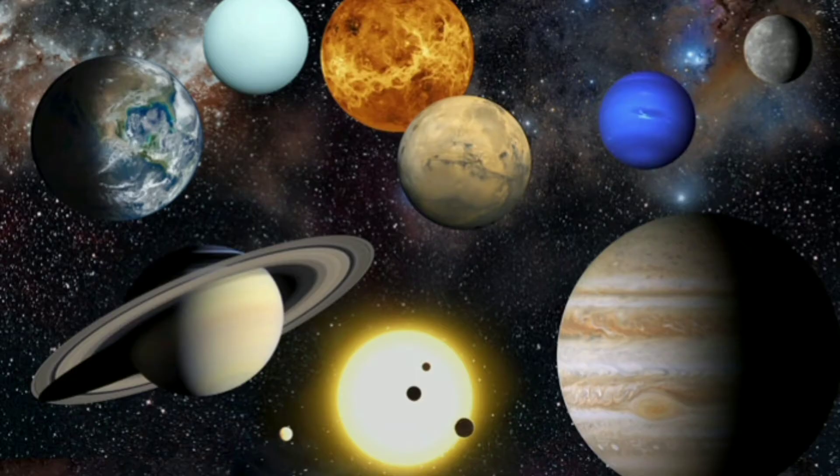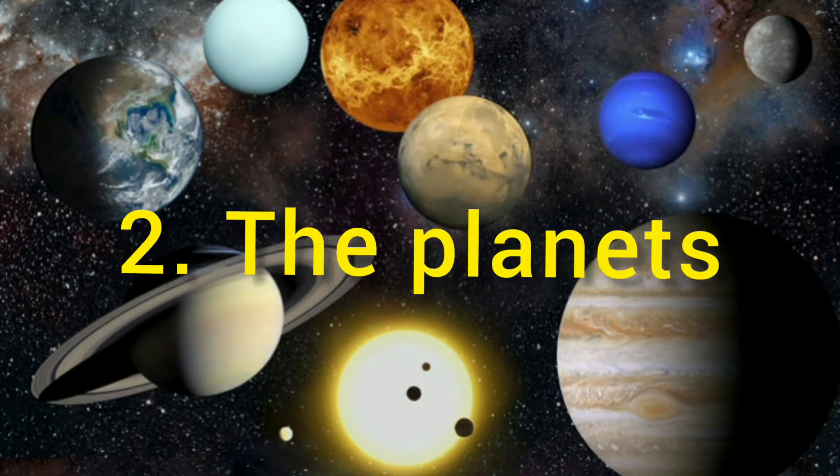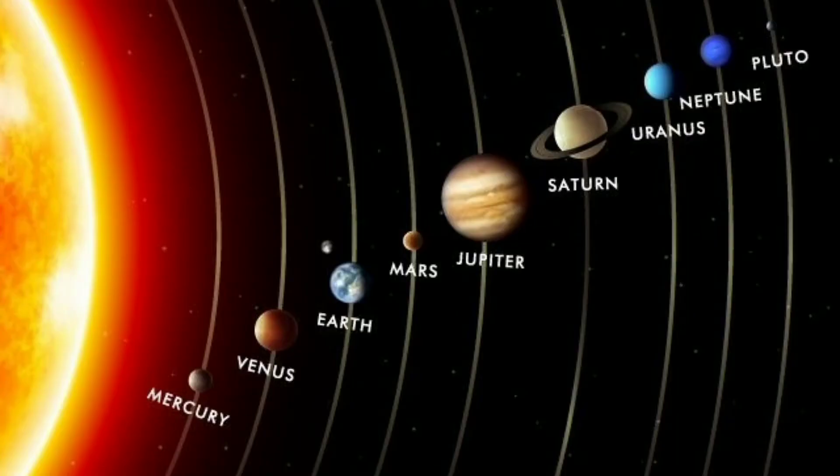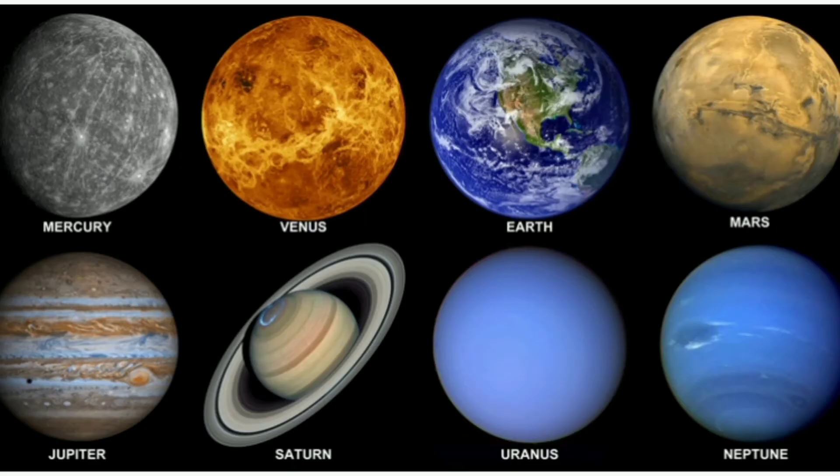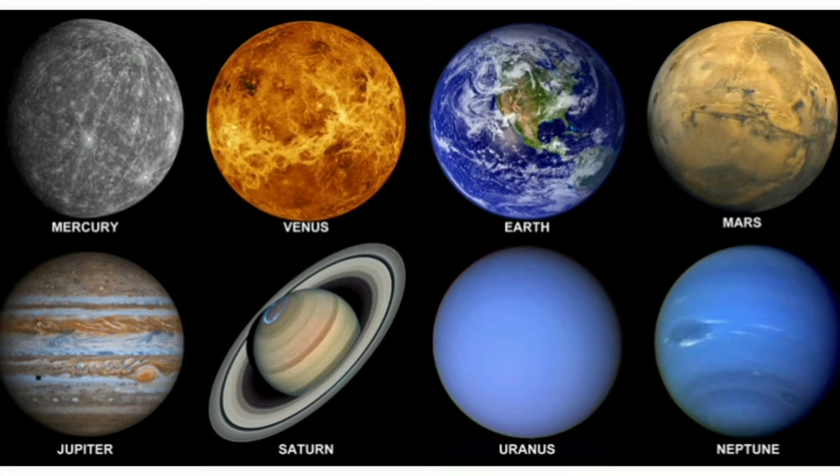The second major component of the solar system is the planets. There are eight planets in the solar system. They are Mercury, Venus, Earth, Mars, Jupiter, Saturn, Uranus and Neptune.